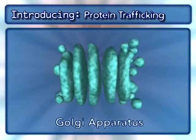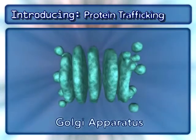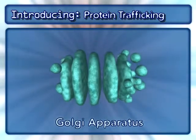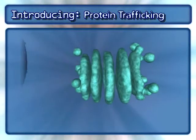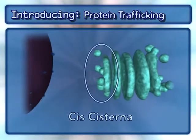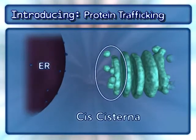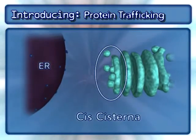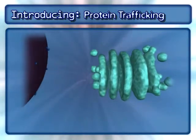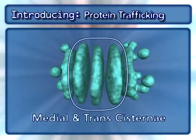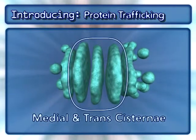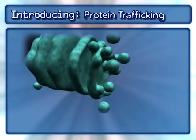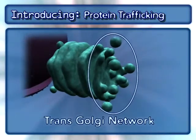The Golgi apparatus consists of general components: the cis-cisterna nearest the endoplasmic reticulum or ER, the medial and trans-cisternae, and the trans-Golgi network.